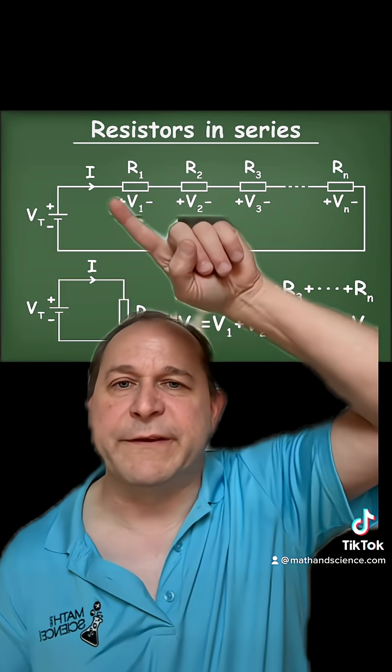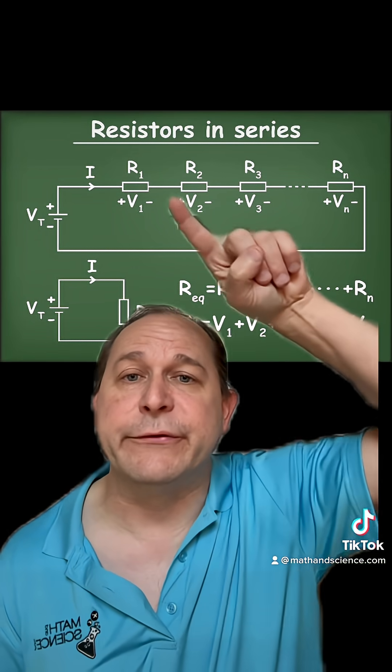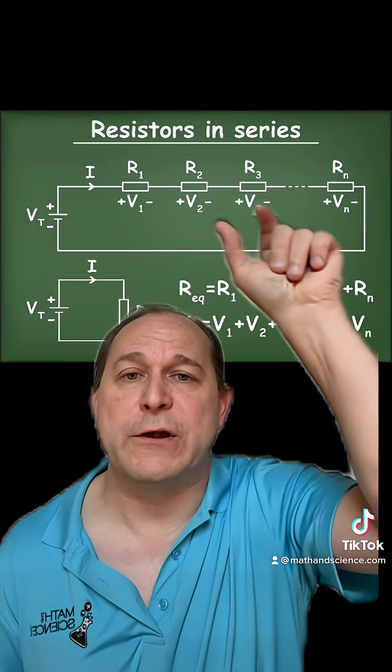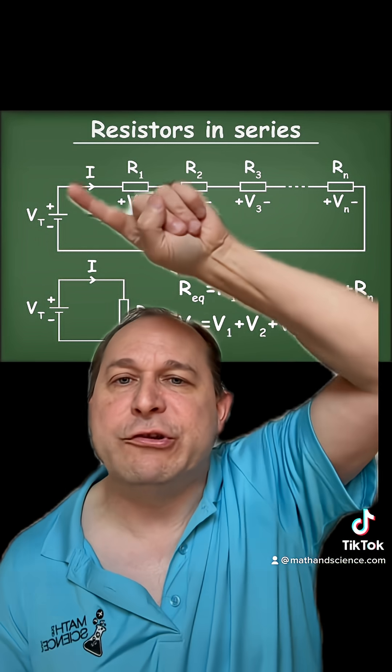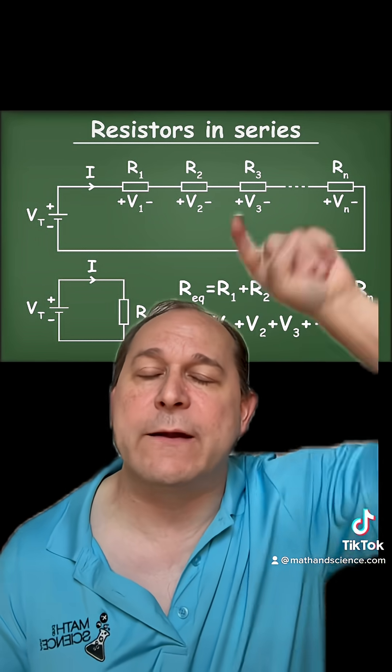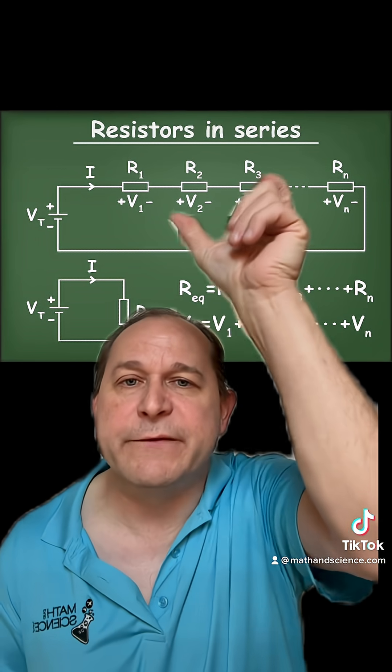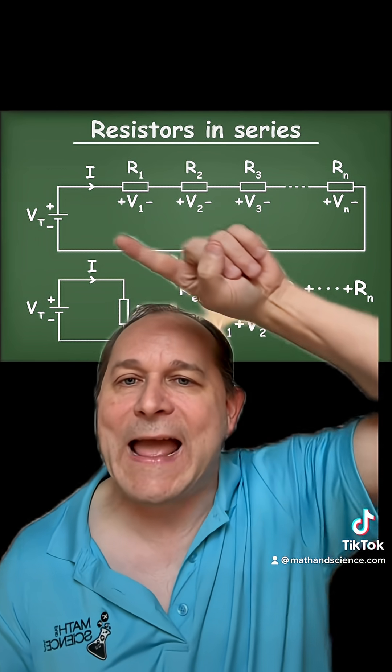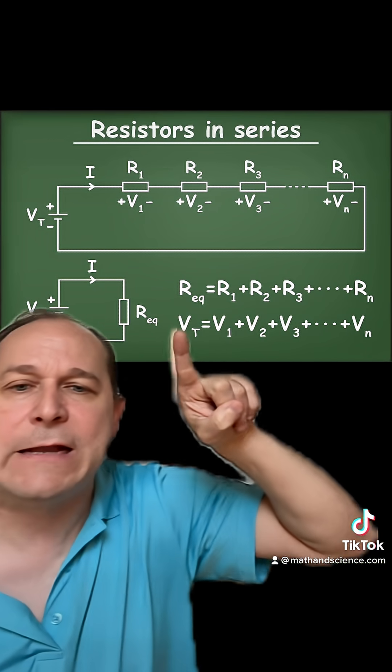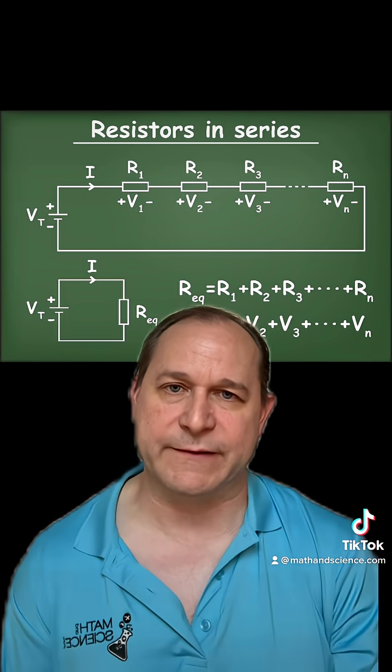Now, in general, these resistances can be totally different values. And so the voltage drops will be different across each element. But if you can trace a path with your finger around a closed loop, the sum of the voltage drops is always going to add up to the sum or the total voltage that you had pushing from the top of the mountain.